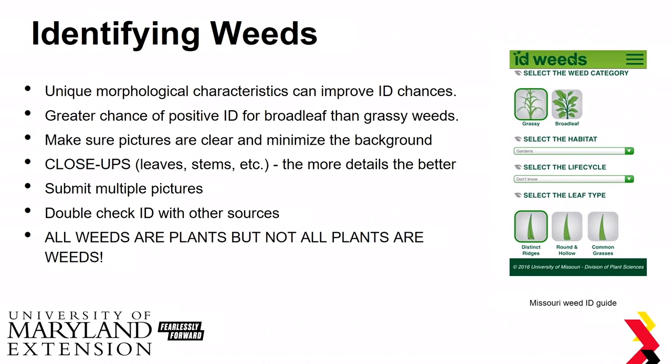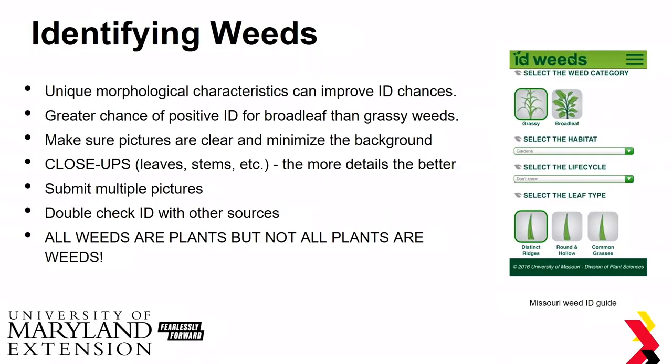If you're using instant weed ID apps, I recommend taking close-up pictures, or if you're sending pictures to your county agents, details are very important. Submit multiple pictures, and double-check with other resources such as weed ID guides. Those apps that instantly tell you what a weed is don't work that well — they'll tell you if something is a broadleaf or a grass, but they're not going to tell you what species it is.